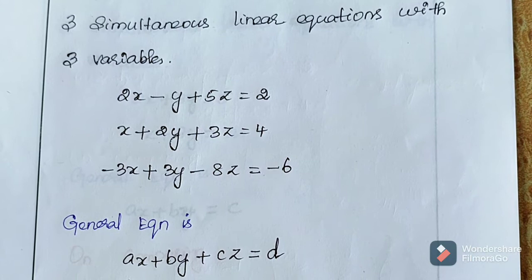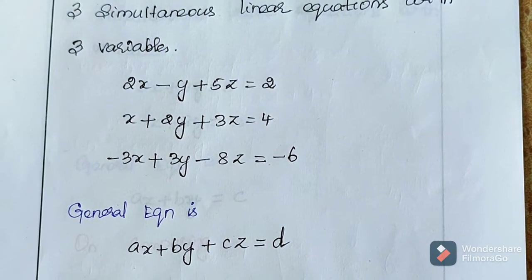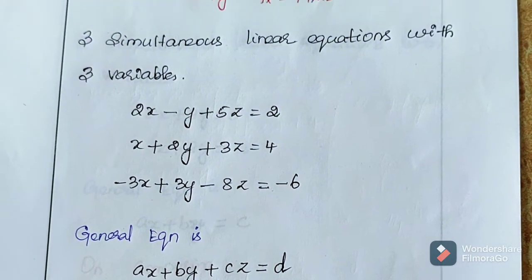We know the general equation. The general equation is of the form AX plus BY plus CZ equals D.